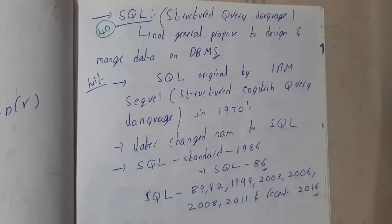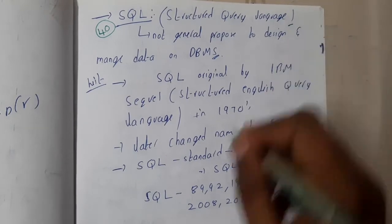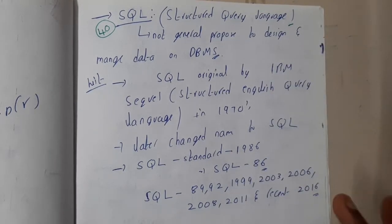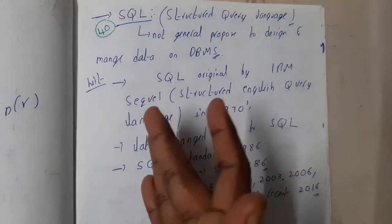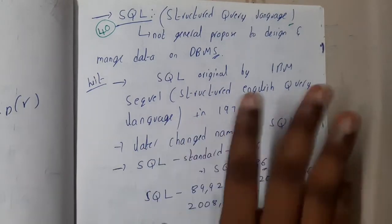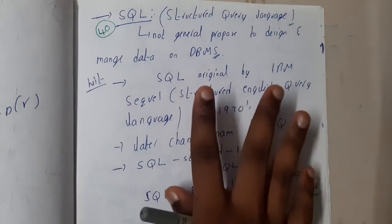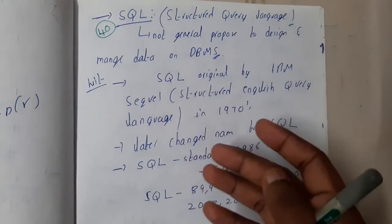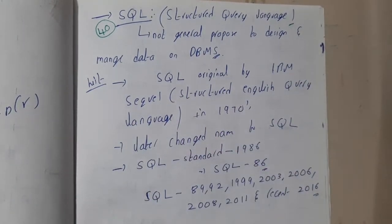Hello, we are back with our next lecture. In the last few lectures we discussed relational algebra in detail. Now let us move towards SQL. SQL is a Structured Query Language — it is a command-based approach, not a general-purpose programming language. These commands can be run directly on a database, written as code and executed on a particular table. That is the major advantage of SQL.